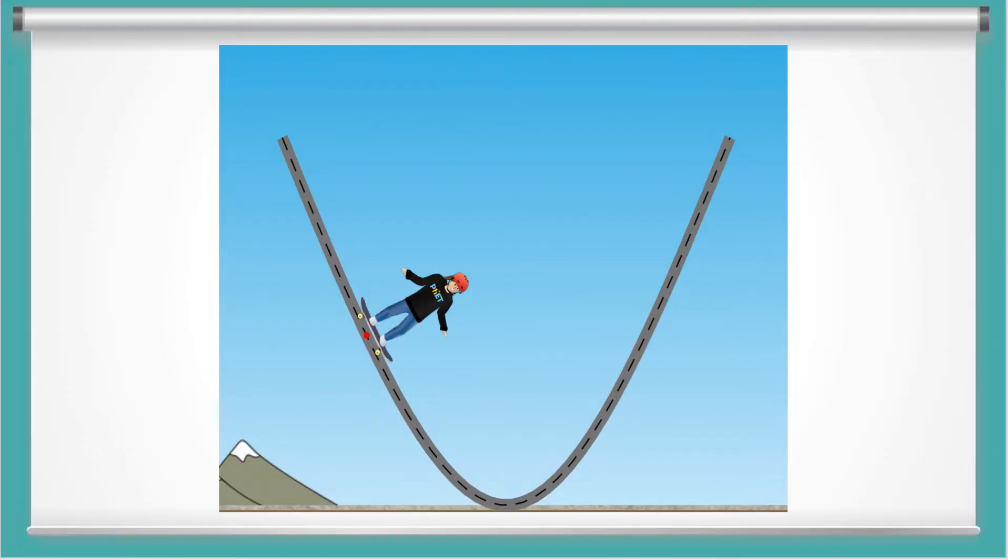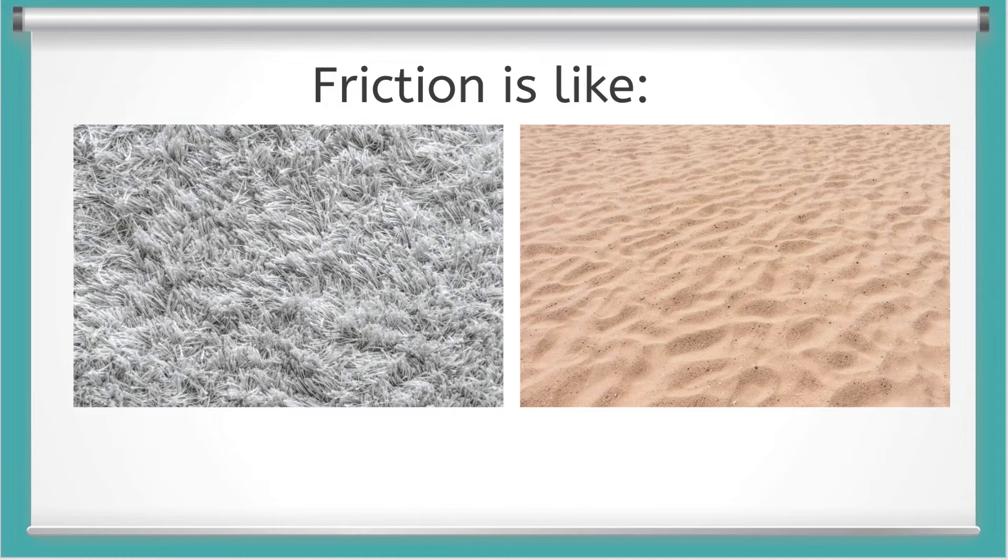In the real world, we know that a skateboarder can't roll forever. Yes, she will get tired, but there's also something that naturally slows her down. But what is that thing? It's called friction, and friction is a force that stops things from moving.